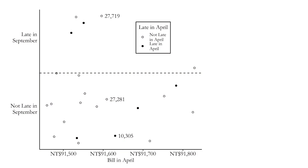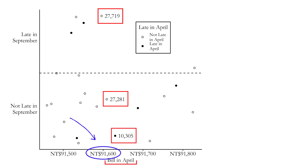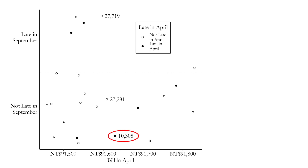Thinking about one variable, we can look at this graph. Along the x-axis is our matching variable. We have a treated observation — row 10,305 — and I want to find somebody close to them on that x-axis. I have two candidates: row 27,719 and row 27,281. All three had bills in April close to 91,600, so these are pretty comparable. I would pick whichever is closest to row 10,305 as the comparison.